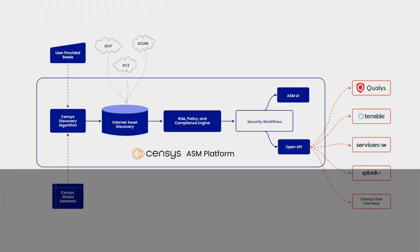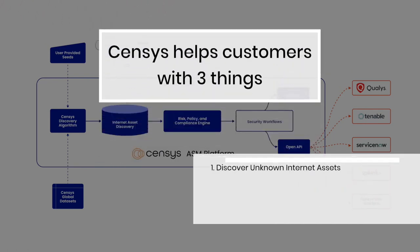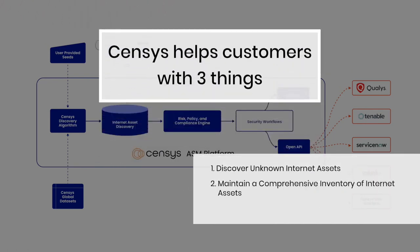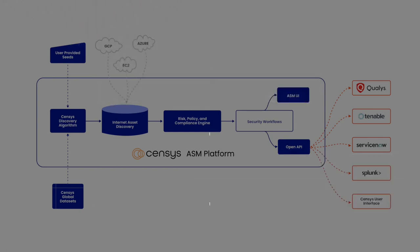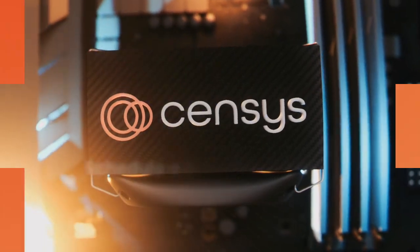To reiterate, the three things Census can help you accomplish: discovery of unknown internet assets, maintaining a comprehensive inventory of internet assets, and identifying and remediating internet risks. Schedule a demo to learn more about your attack surface.